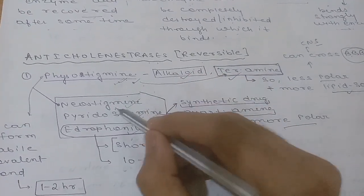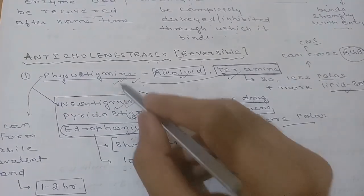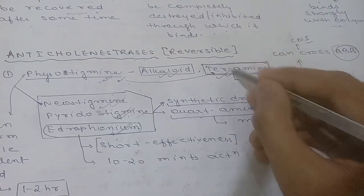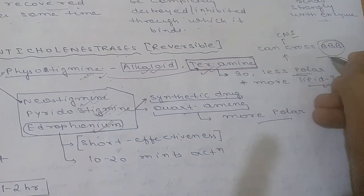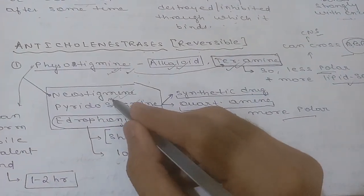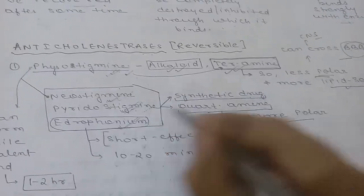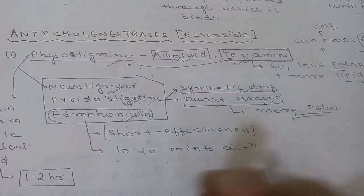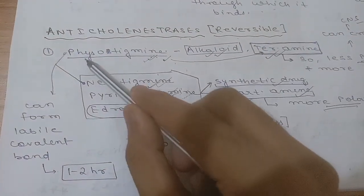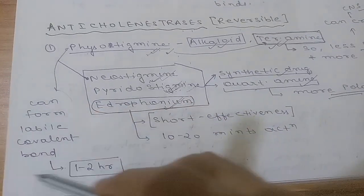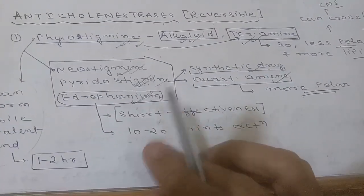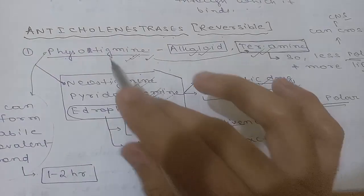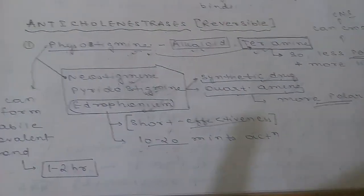Reversible anticholinesterase drugs include physostigmine, neostigmine, pyridostigmine, and edrophonium. Physostigmine is an alkaloid of tertiary amine nature; because of this it is less polar and can cross the blood-brain barrier. Neostigmine, pyridostigmine, and edrophonium are synthetic drugs and are quaternary amines, so they are more polar and do not cross the blood-brain barrier easily. Physostigmine and neostigmine form labile covalent bonds for one to two hours; edrophonium acts for only 10 to 20 minutes.